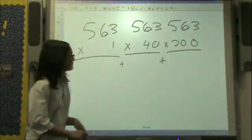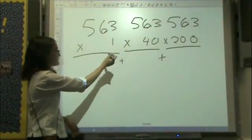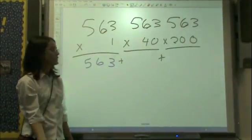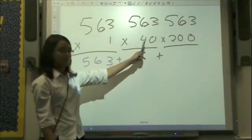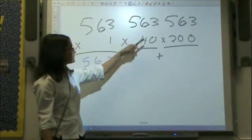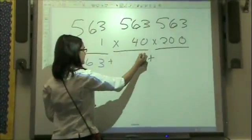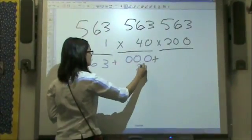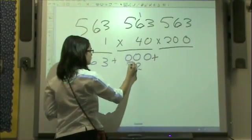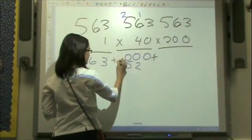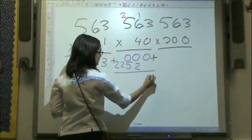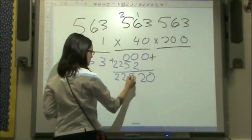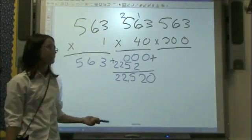So you do 563 times 1, which is 563. And then you take the 4 from the tens place, which is 40, and you multiply that by 563, and you get 22,520.